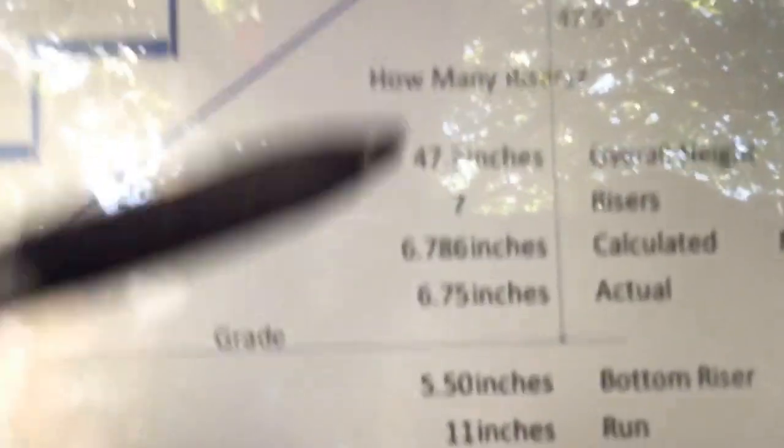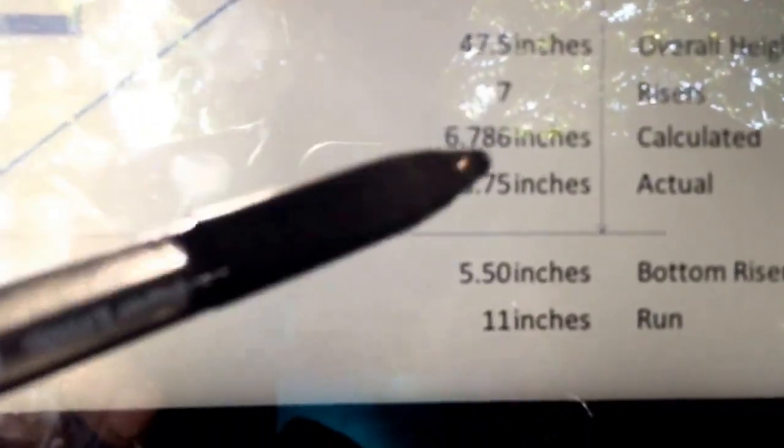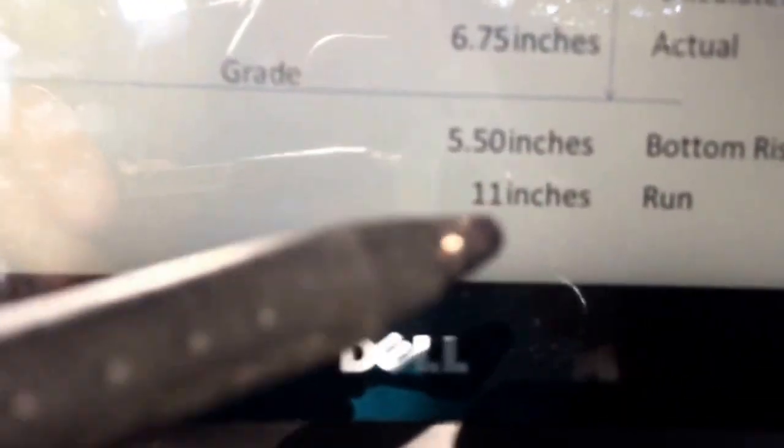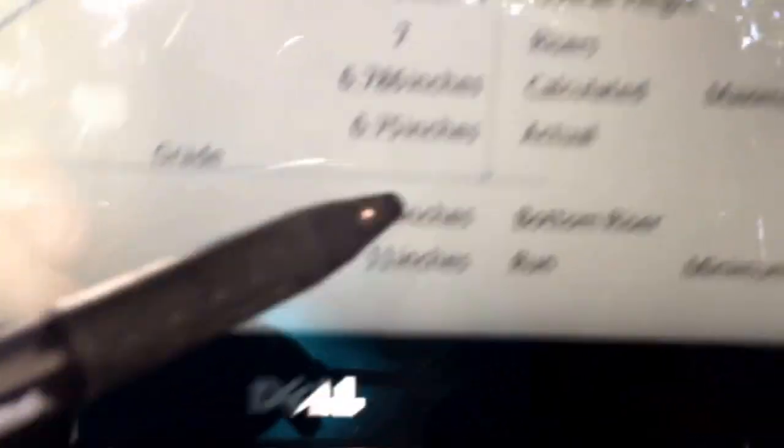So that's what we're doing. We're going to take basically six of these rises will be at six and three quarter. One of these rises will be at five and a half. And then the run as we stated earlier is 11 inches.